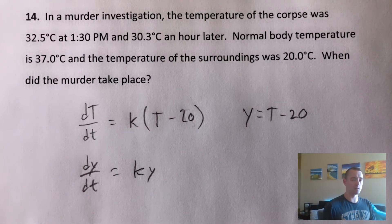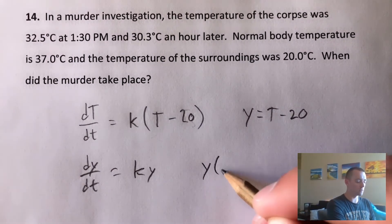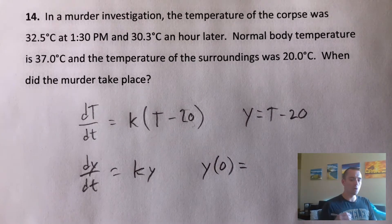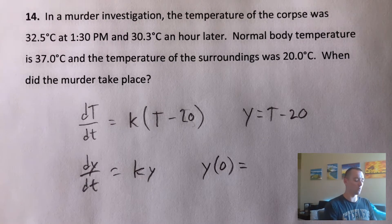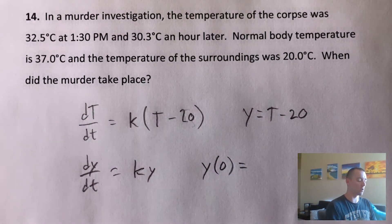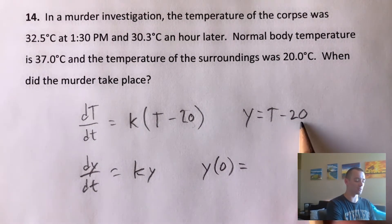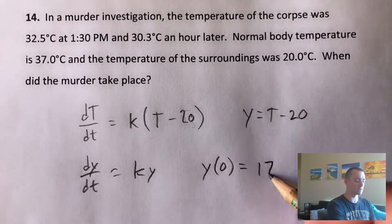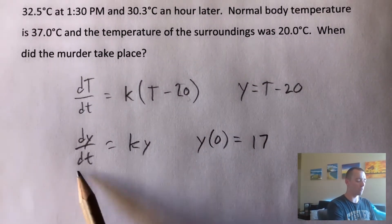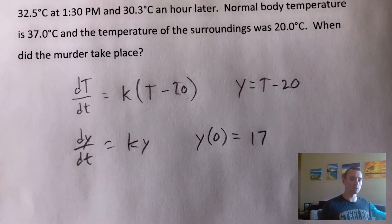We also need to figure out the initial condition so that we have an initial value problem. We need to figure out what Y is when t equals zero. When t is zero — basically when the murder occurred — the body would have been at normal body temperature, 37 degrees. Since Y is temperature minus 20, Y(0) equals 37 minus 20, which gives us 17. So we have dY/dt equals K times Y, with Y(0) equals 17.